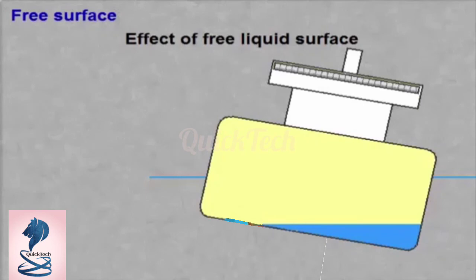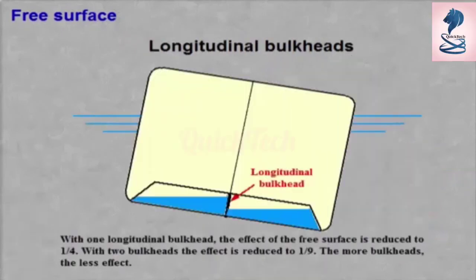With one longitudinal bulkhead, the effect of the free surface is reduced to one-fourth. With two bulkheads, the effect is reduced to one-ninth. The more bulkheads, the less effect.